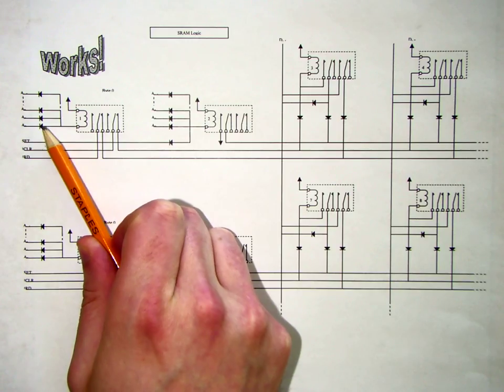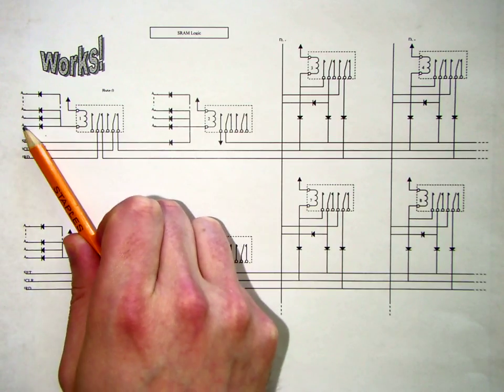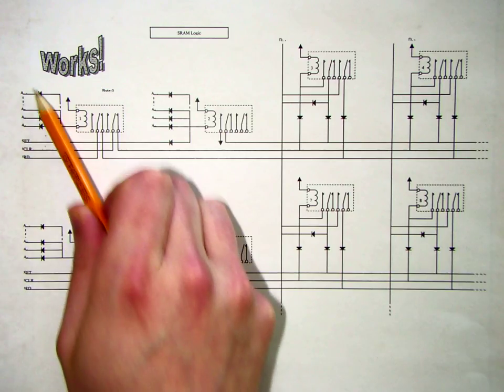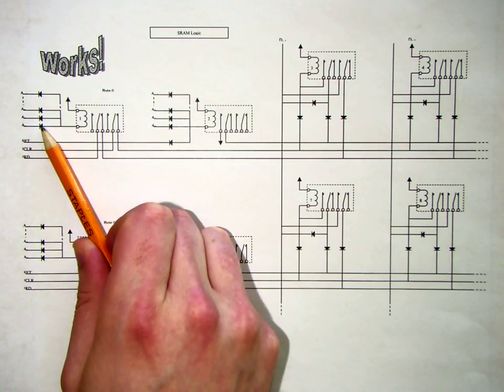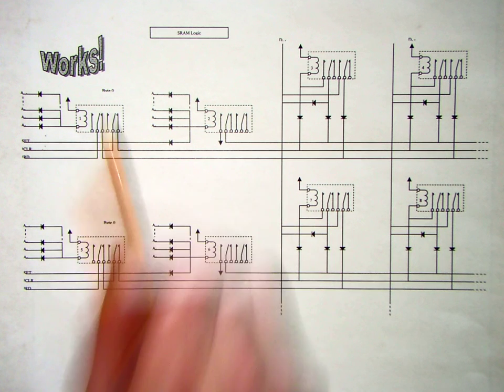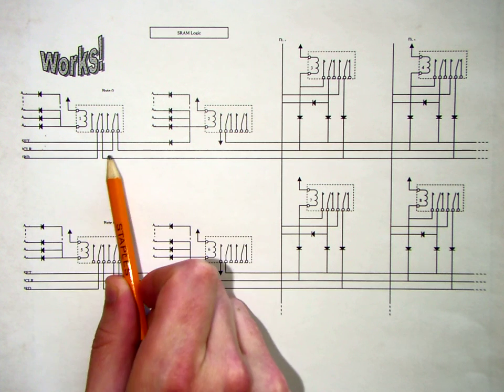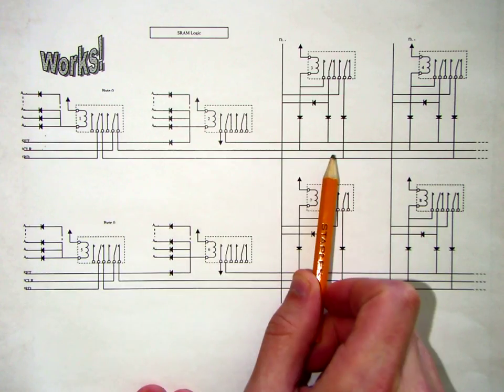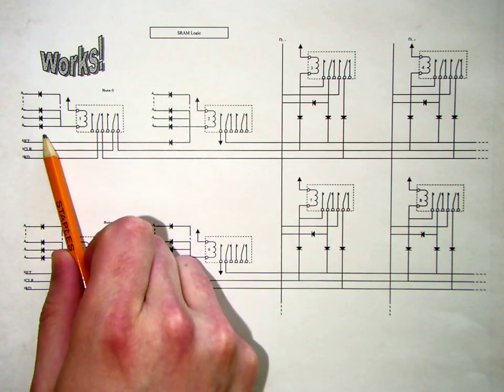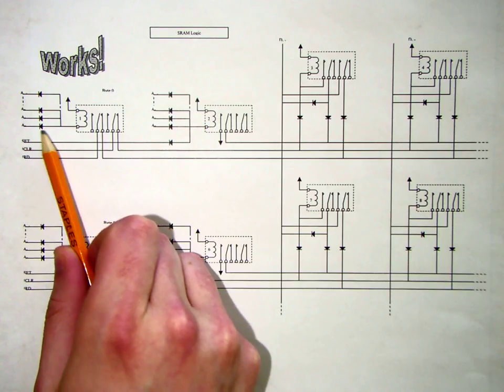For example, if I wanted this memory location to be active when A0 was low, I would actually need to tie this here to the inverted sense of A0. Basically, if any of these address inputs are low, the relay will flip and the control signals will not be applied to that memory location. If all of these inputs are floating, then this memory location is selected.